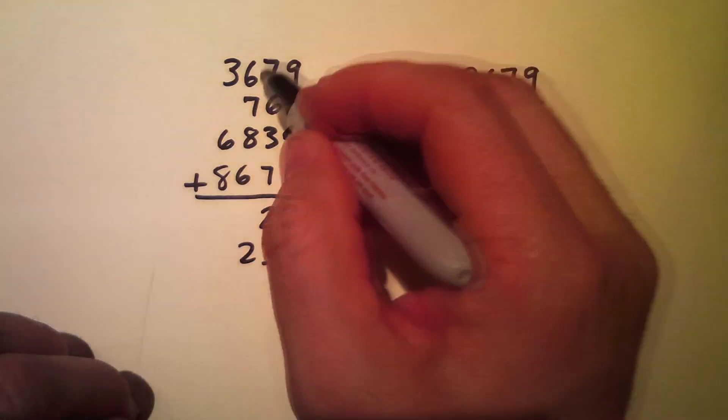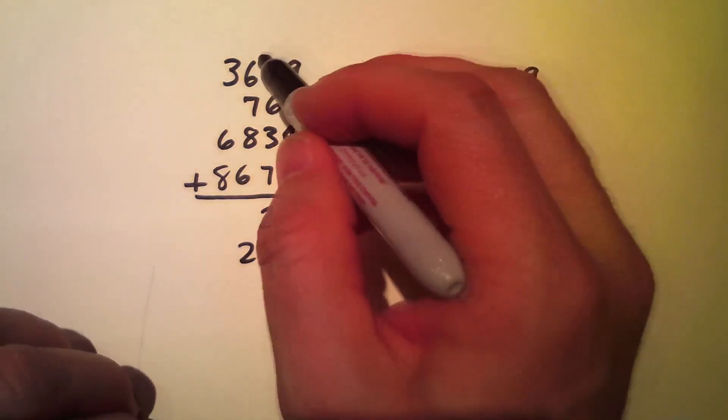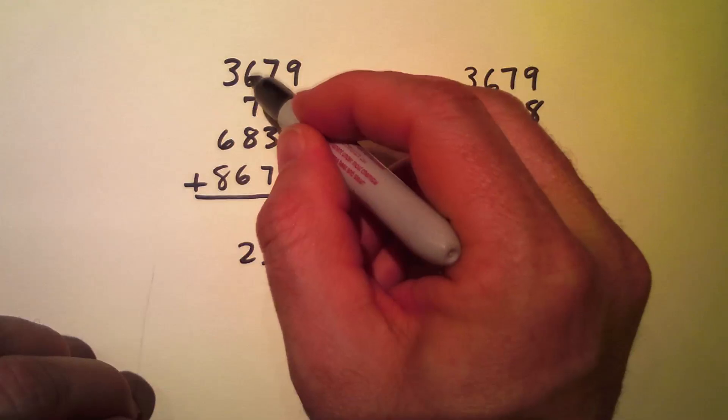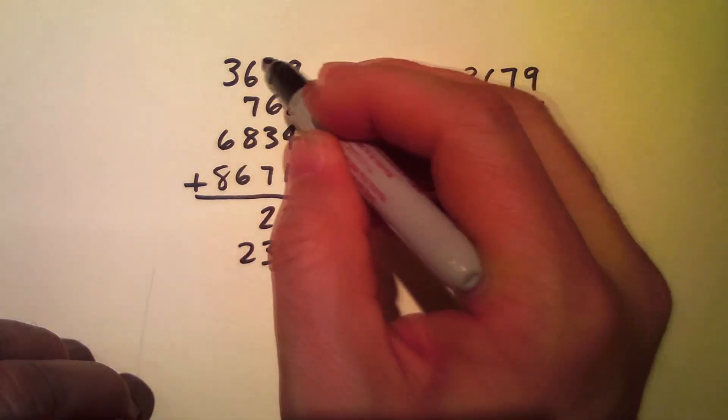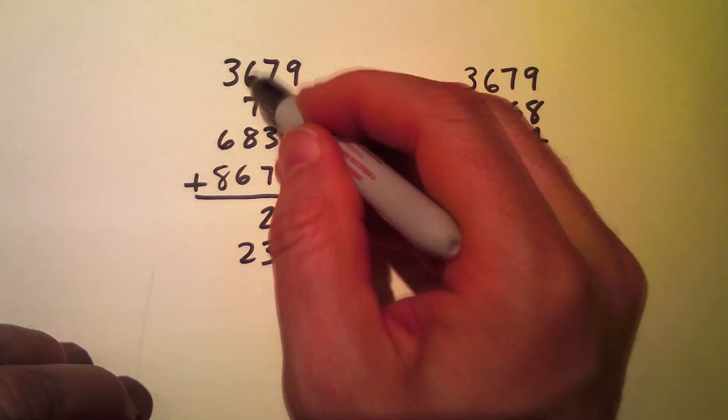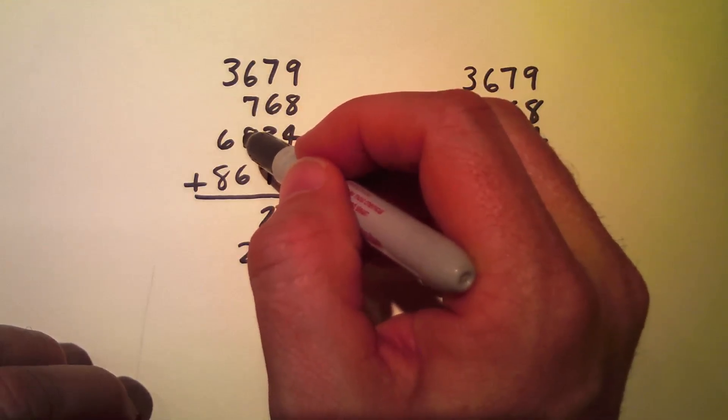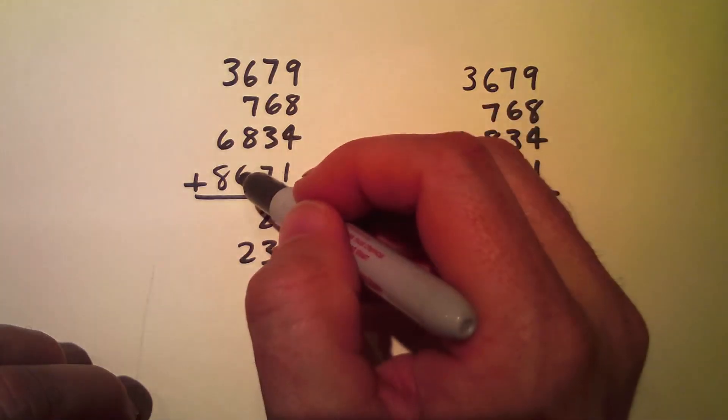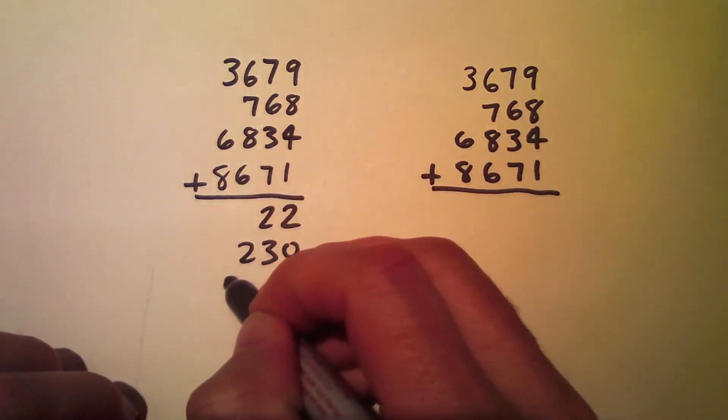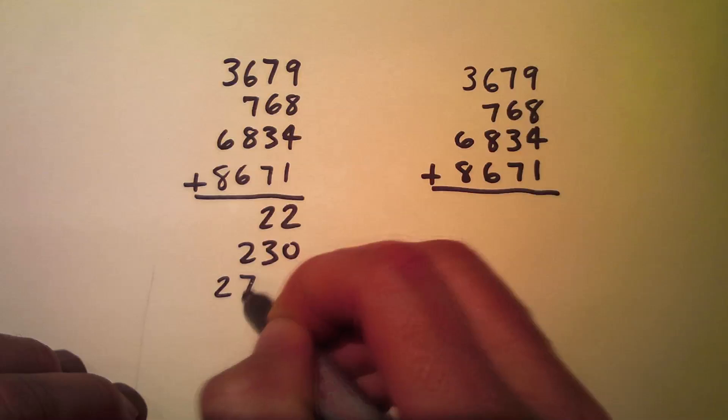Now I need to add the hundreds. So really what I'm going to do is add these as ones and keep two zeros. 6 and 7 is 13, and 8 is 21, and 6 is 27. So this is 2700.